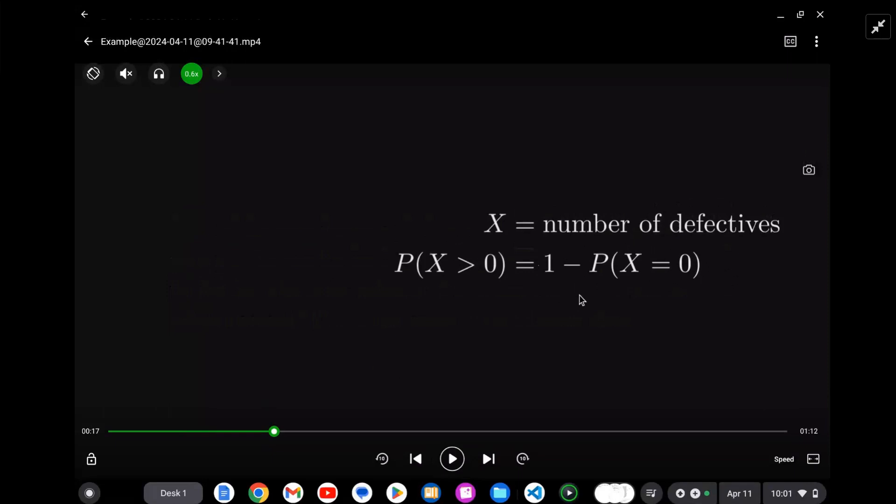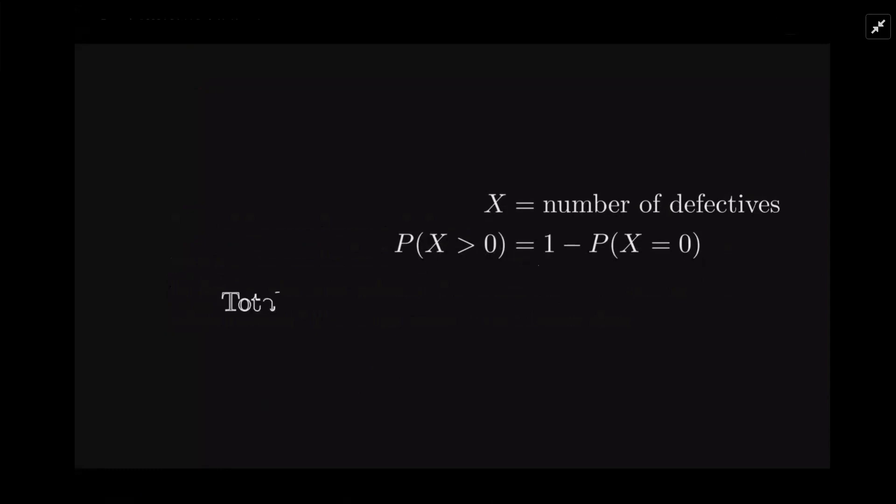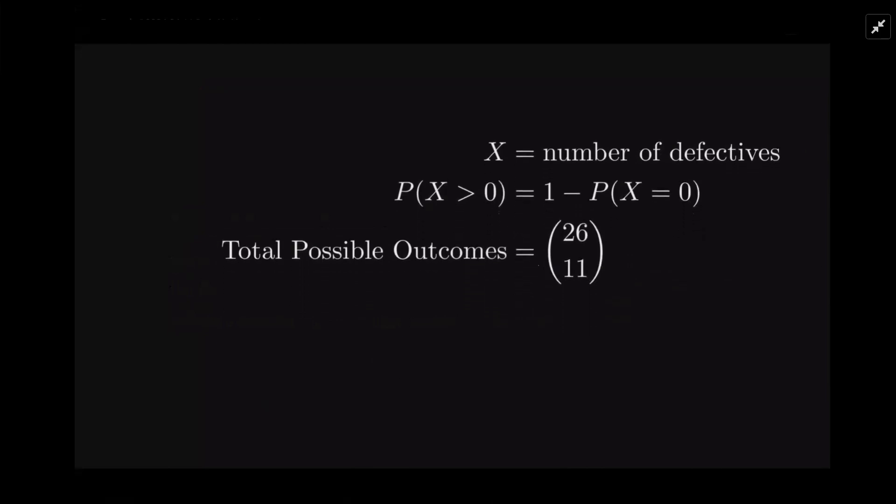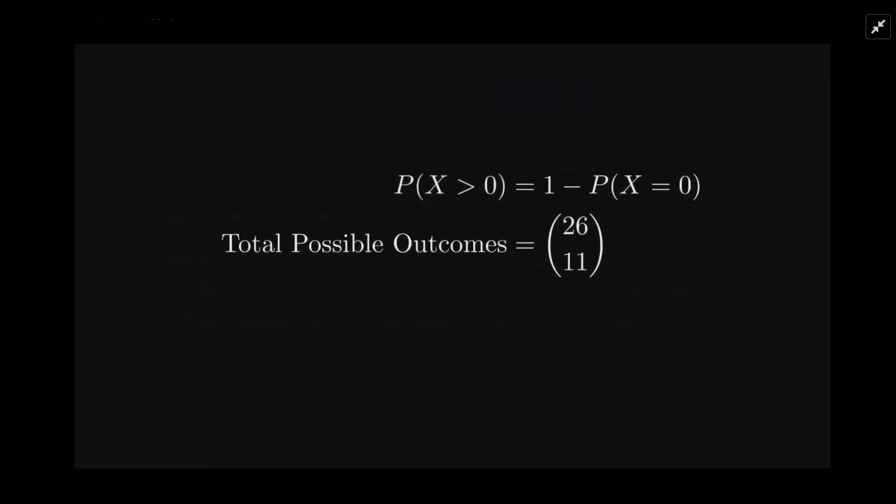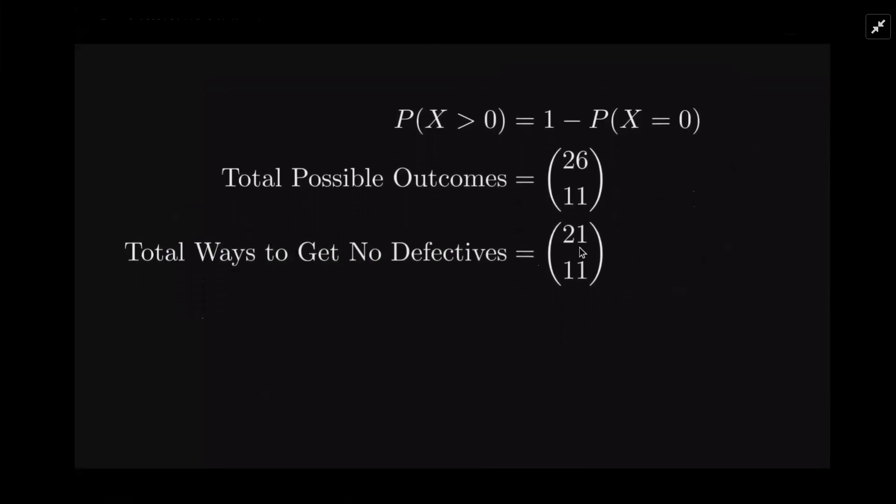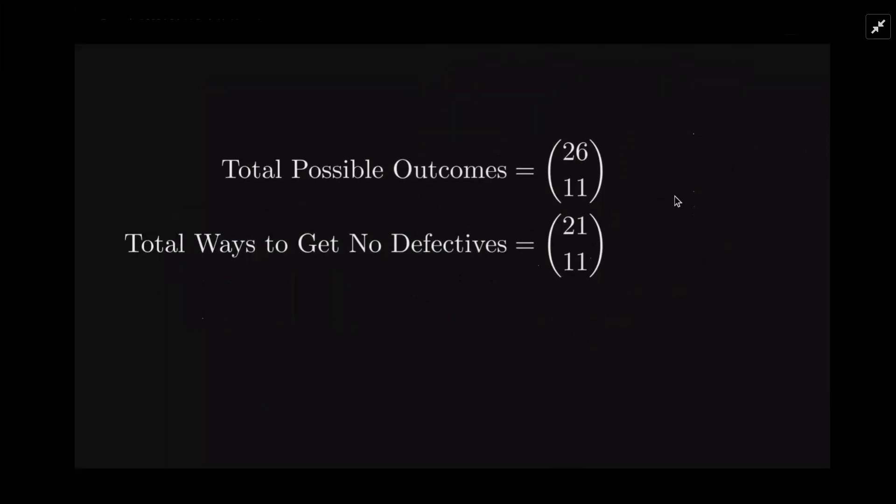This is going to be an easier probability to calculate, and that's what we'll do here. So the total outcomes for my denominator, it's going to be a combination. From 26 we choose 11. There's that many total combinations for choosing 11. And we want no defectives, so in our numerator we have 21 without defects because there's 5 with defects.